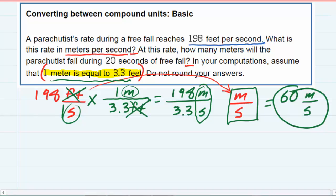So we need to turn our attention back to the second question that says, at this rate, how many meters will the parachutist fall during 20 seconds of free fall? They want to figure it out that it's going 60 meters per second. And we want to figure out how far, which is going to be meters, in 20 seconds. So we can just multiply by the 20 seconds that was provided, and the seconds will cancel.